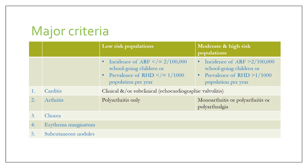The five major criteria are: carditis, arthritis, chorea, erythema marginatum, and subcutaneous nodules. The carditis criterion remains the same in both types of populations — it can be either clinical and/or subclinical carditis. Subclinical carditis requires echocardiographic evidence in the form of echocardiographic valvulitis. The arthritis criterion in low-risk populations requires polyarthritis, whereas in moderate-to-high-risk populations, monoarthritis, polyarthritis, or even polyarthralgia can be considered.